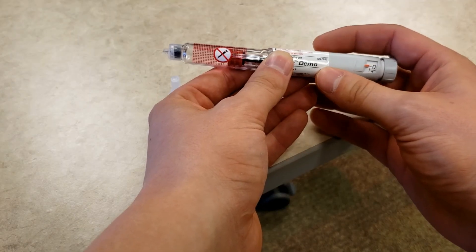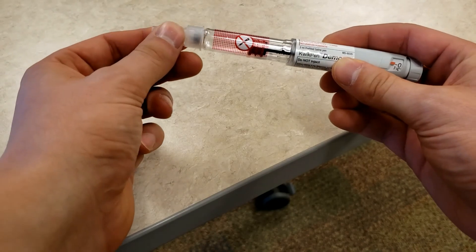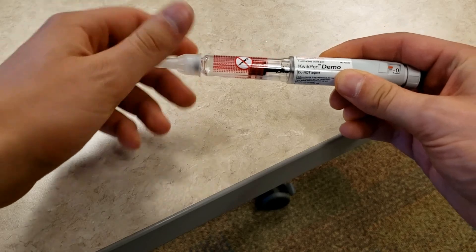To remove the needle from the insulin pen, put the large cover back on the needle. Then, twist the needle to remove it from the insulin pen after every injection.